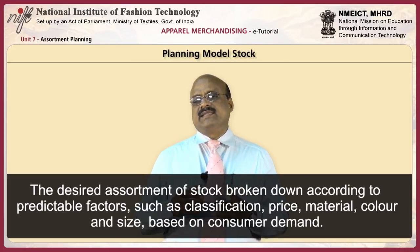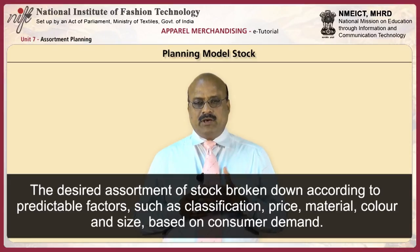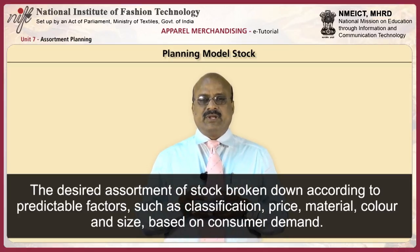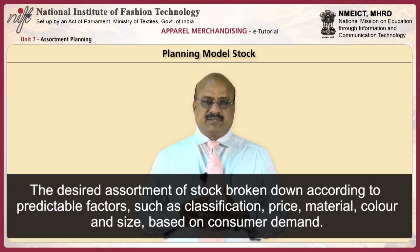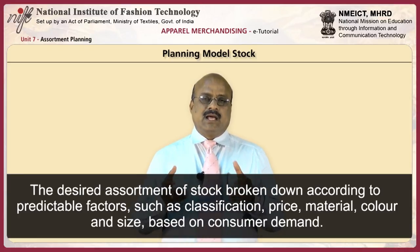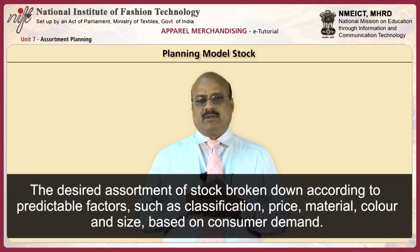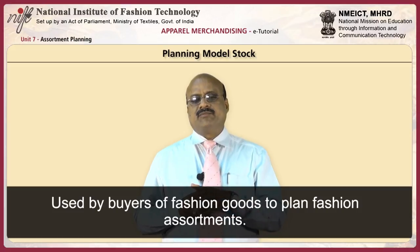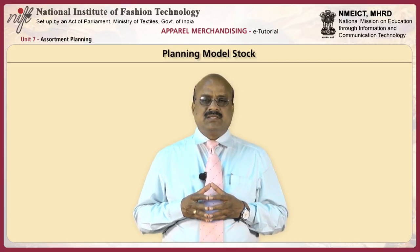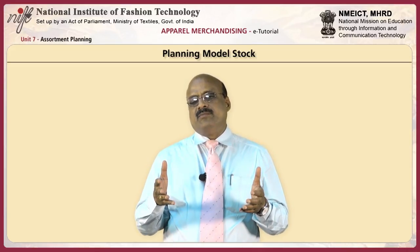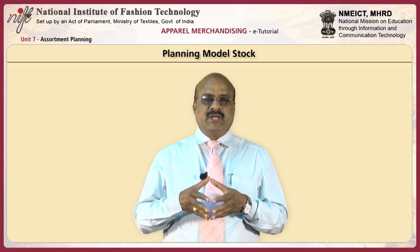The model stock plan is the second method a buyer may use to develop the assortment plan. A model stock may be defined as the desired assortment of stock broken down according to predictable factors such as classification, price, material, colour, and size based on consumer demand. The model stock plan is used by buyers of fashion goods to plan fashion assortments, since unlike staple goods, fashion items are identified by general characteristics rather than by specific details.